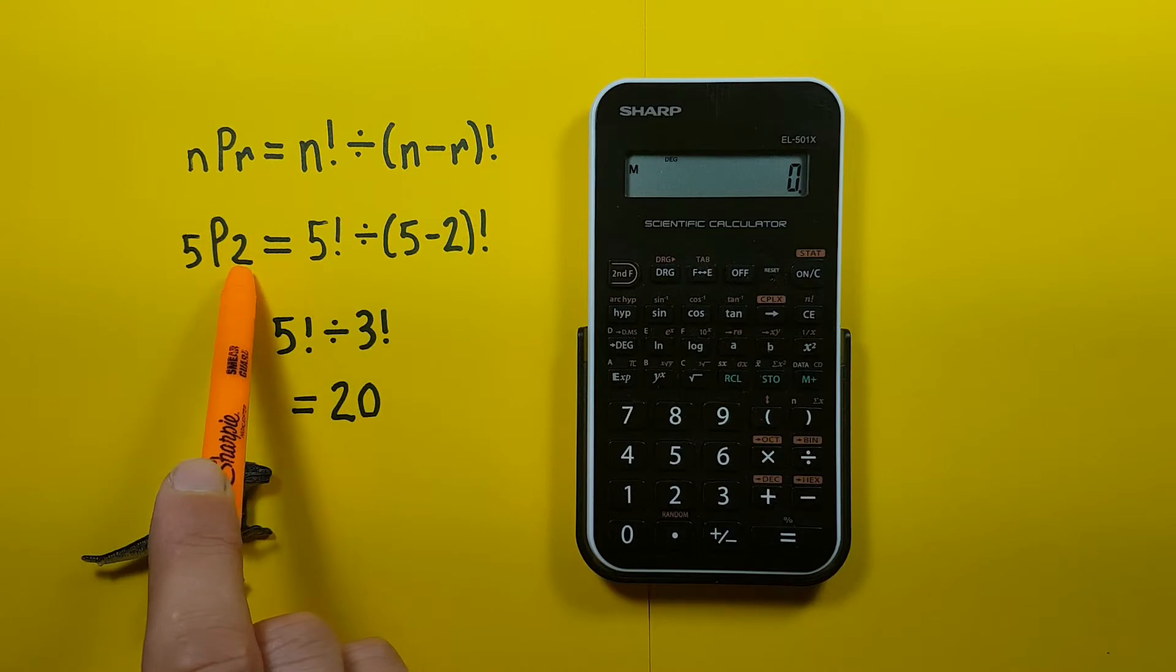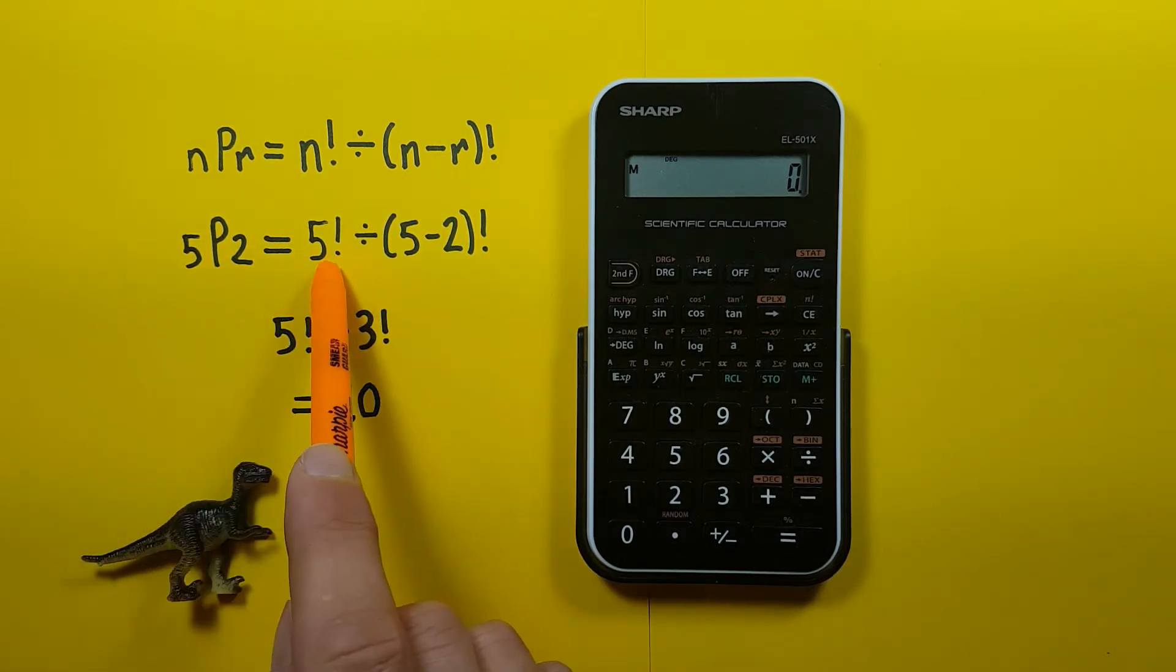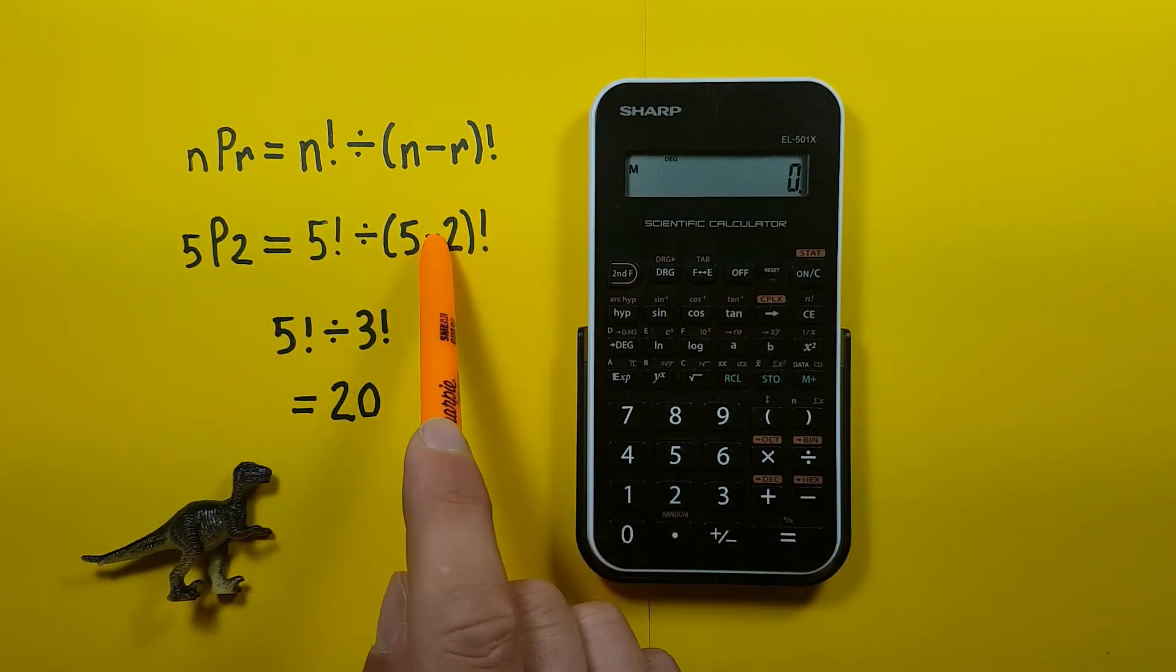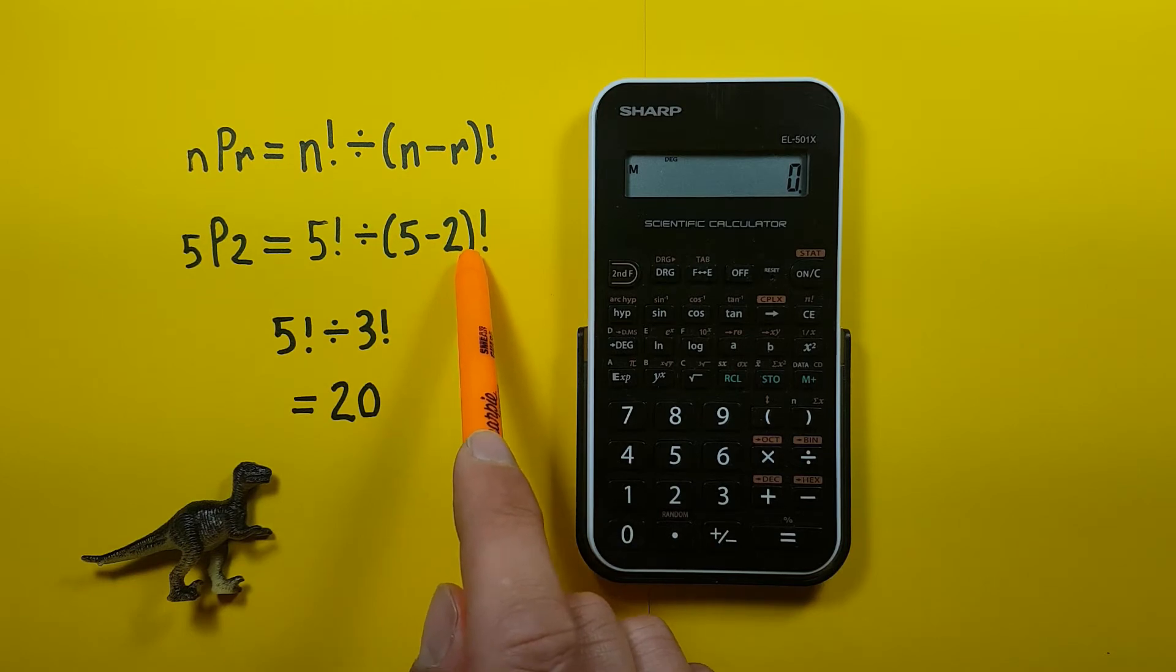So again if we have let's say 5 choose 2 permutations this time we can punch our numbers into our formula which gives us 5 factorial divided by 5 minus 2 and then the factorial of that, which we can simplify down to 5 factorial divided by 3 factorial.